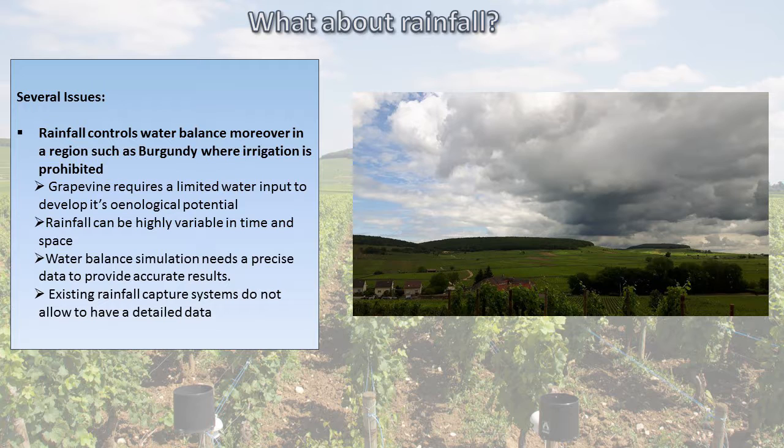So what about rainfall? We know that rainfall controls water balance. Moreover, in a region such as Burgundy where irrigation is prohibited, we know that grapevine requires a limited water input to develop its oenological potential. Rainfall can be highly variable in time and space, especially when there are convective events.